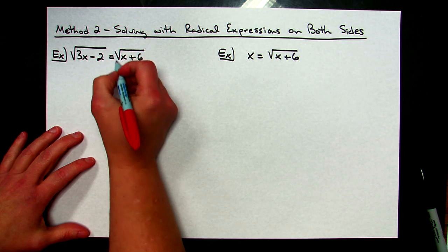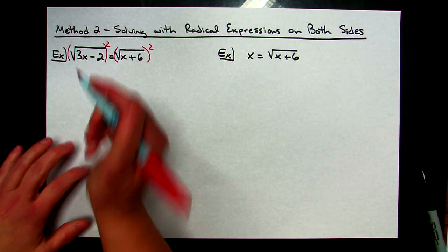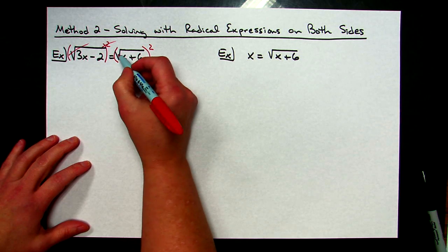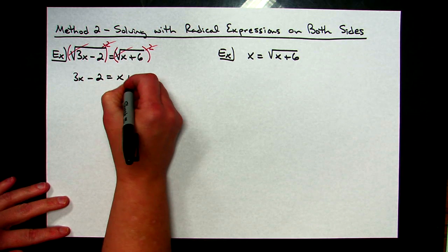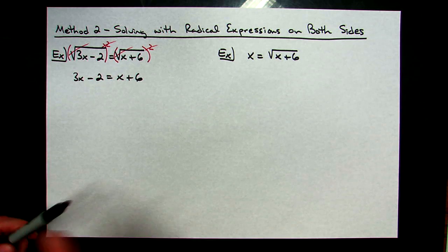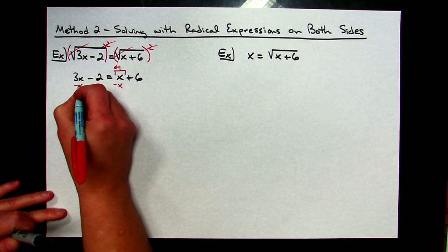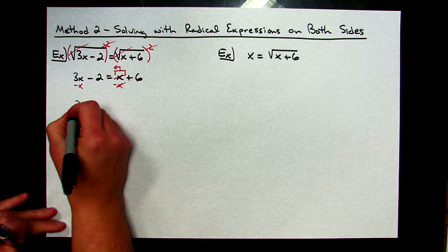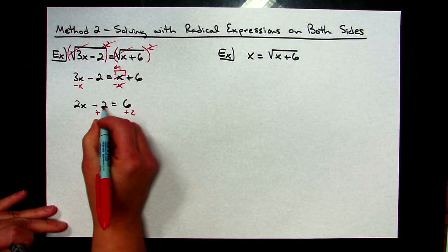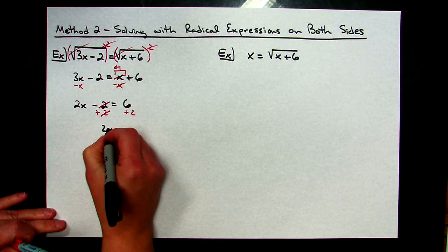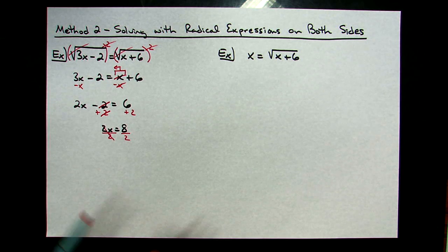I've got a radical on both sides and it's isolated on both sides. I'm going to square the left-hand side and square the right-hand side. The square root and the square sign go away on both sides, leaving me with three x minus two equals x plus six — just what's underneath the radicals. Solving an equation with x on both sides, I subtract x from both sides, giving me two x minus two equals six. Adding two to both sides gives two x equals eight, then dividing both sides by two gives x equals four.